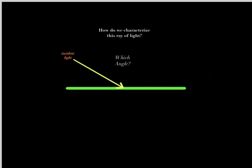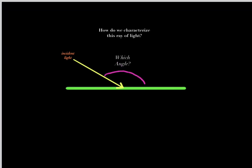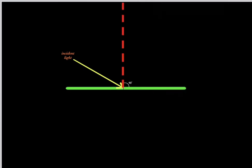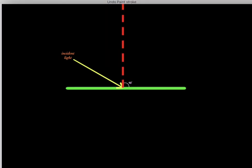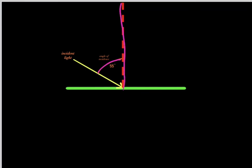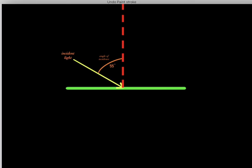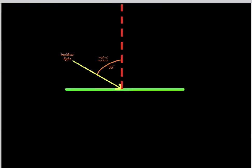In order to truly understand reflection and refraction, we first need to understand how physicists characterize incident rays of light. An incident ray of light just means the initial ray of light that hits a medium. The convention physicists use is to first find the normal line — the perpendicular line that is 90 degrees from the medium. Then find the angle between the incident ray of light and that normal line. For example, this angle is 55 degrees, so we refer to this as the angle of incidence.